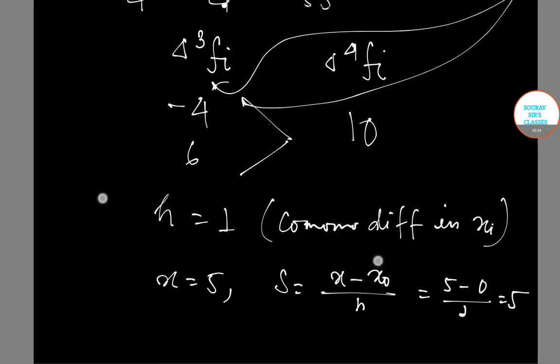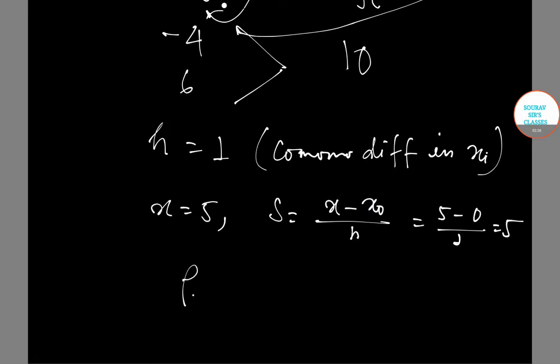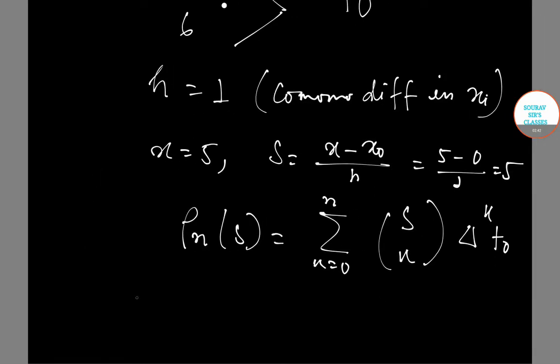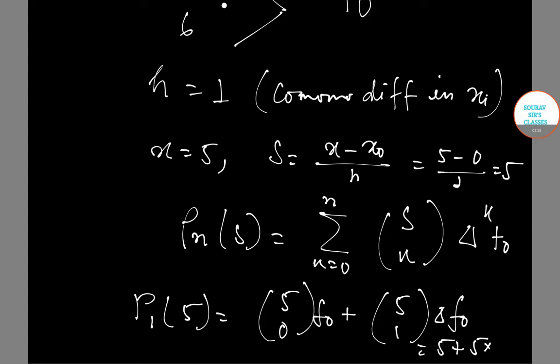P_n(S) equals 5, and we can say that this is 10. P_1(5) equals 5 plus 5 times minus 4, that equals minus 15.